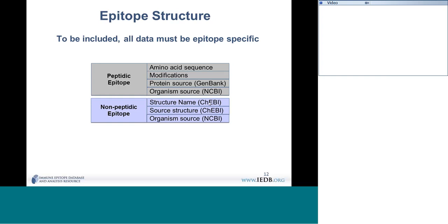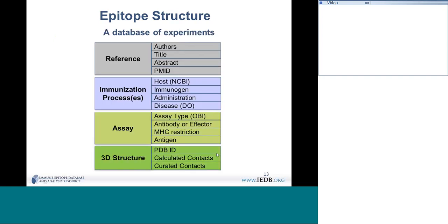If an epitope is derived from a larger structure — for example, if the epitope is a small part of an LPS molecule — the LPS molecule would be the source. The LPS molecule will have its own accession, the epitope itself will also have its own accession, and the natural source will be linked as well.